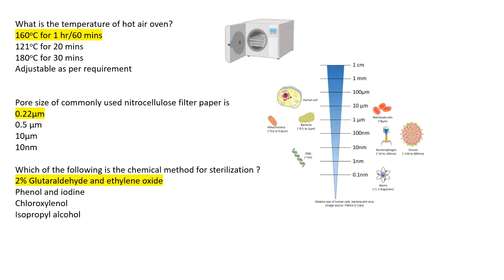Next: what is the temperature of the hot air oven? The correct option is 160 degrees Celsius for one hour, or 60 minutes — don't get confused, they are the same. You have to select 160 degrees Celsius for one hour.